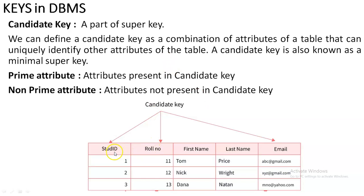Candidate Key: consider a table with attributes StudentID, RoleNumber, FirstName, LastName, and Email. Here, StudentID is a unique value, RoleNumber is a unique value, and Email is also a unique value. FirstName and LastName cannot serve as unique values because names may be repeated for two or more people. Whichever columns are unique will be considered as a Candidate Key.